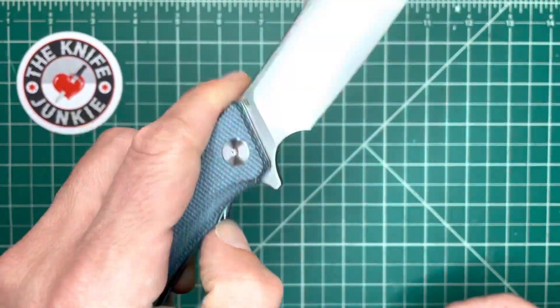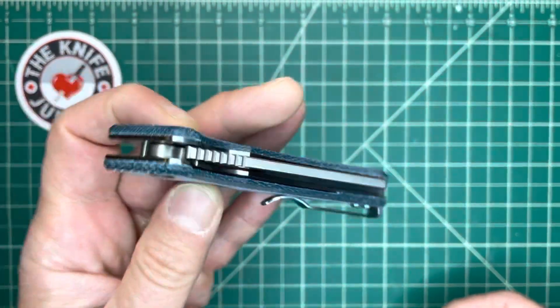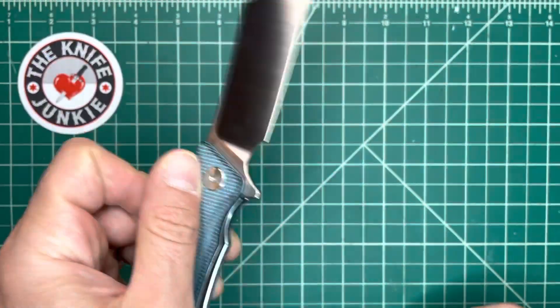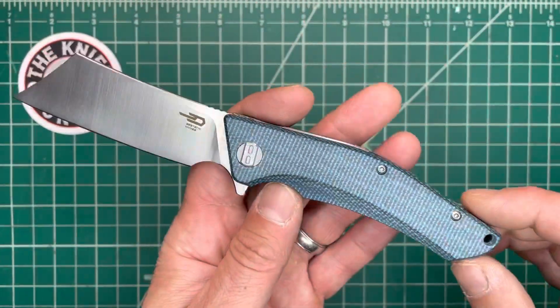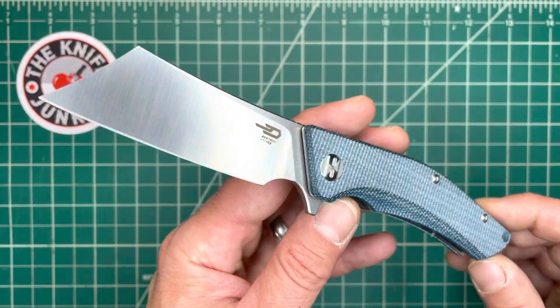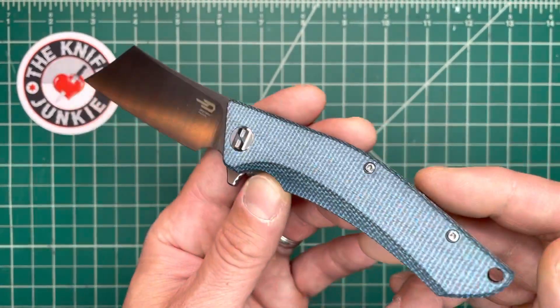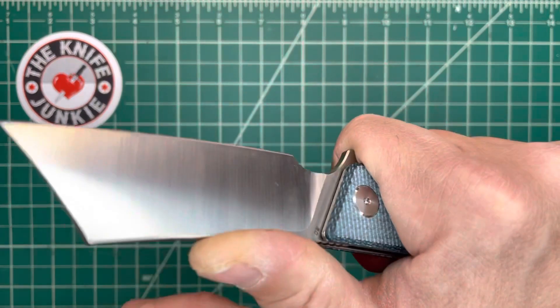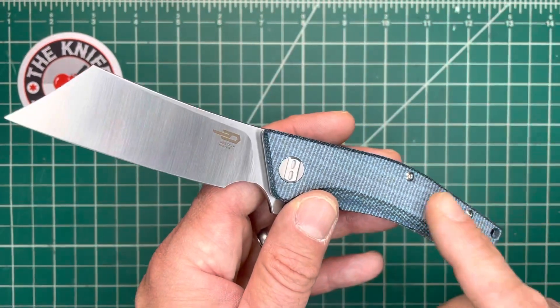But, it is just 100% drop shut, super ultra smooth. And, man, look at that beautiful, beautiful aquamarine micarta. I can't get enough of that. I hope they do other knives with this very same micarta.